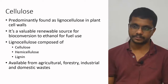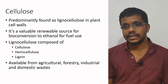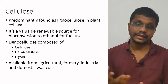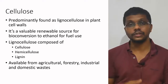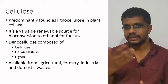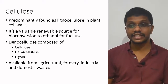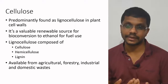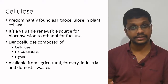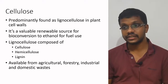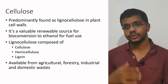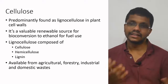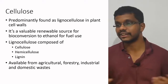Cellulose is found as lignocellulose in the plant cell wall, containing cellulose along with hemicellulose and lignin. Lignin-like components are very difficult to degrade by microorganisms. Lignocellulosic materials are widely available from agriculture, forestry, industrial, and domestic waste, so they are very cheap and easily available. However, the conversion of cellulose to glucose is a bit difficult.